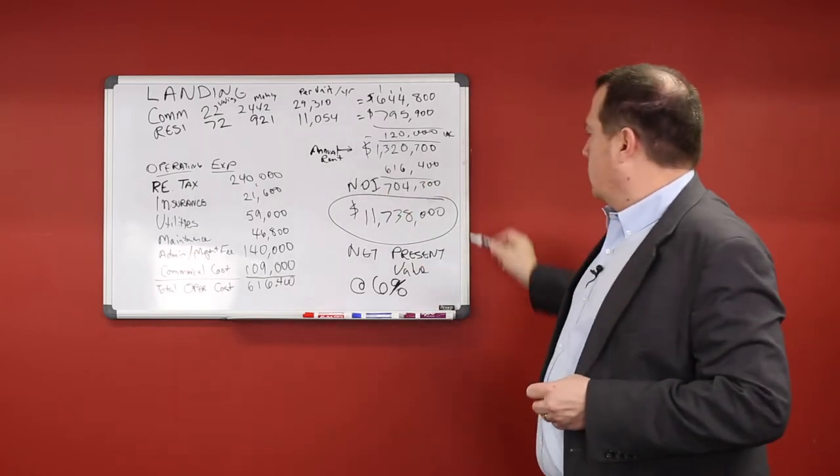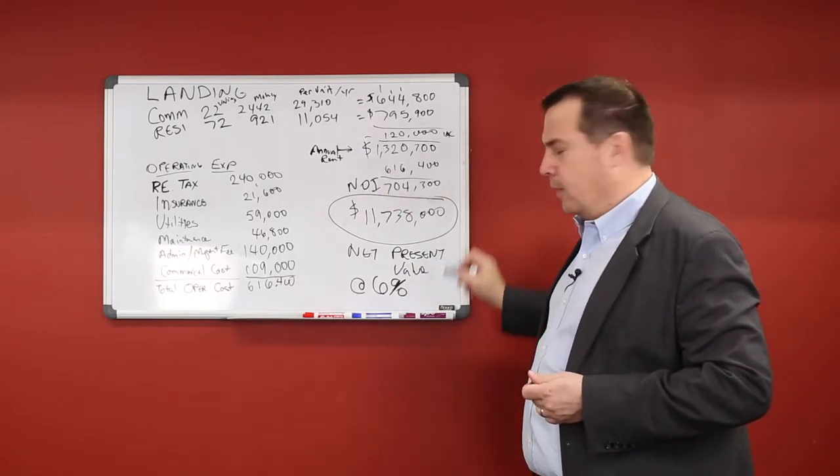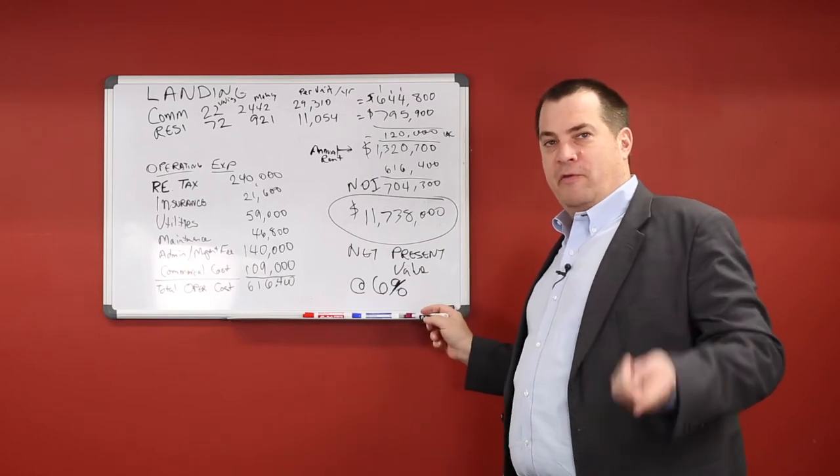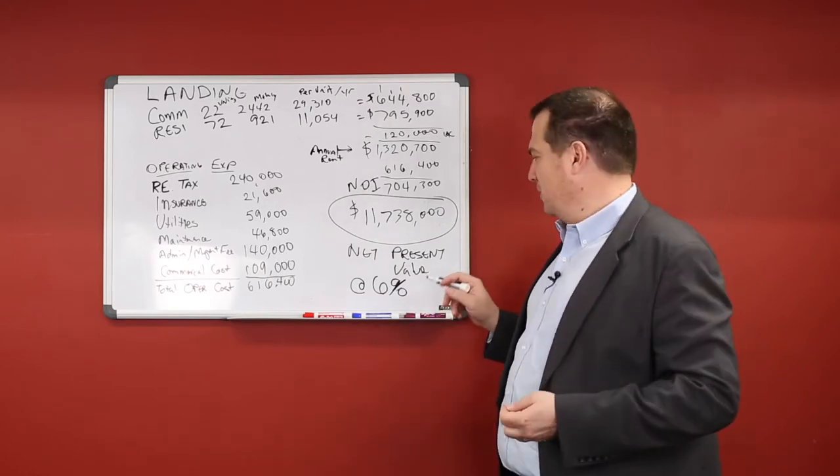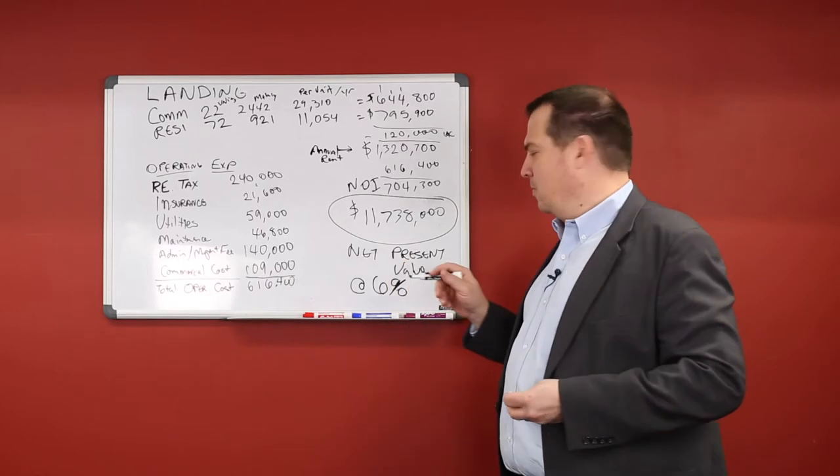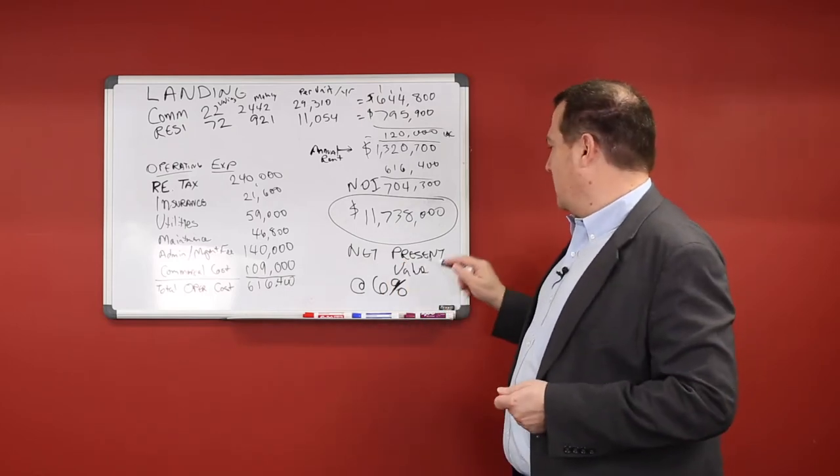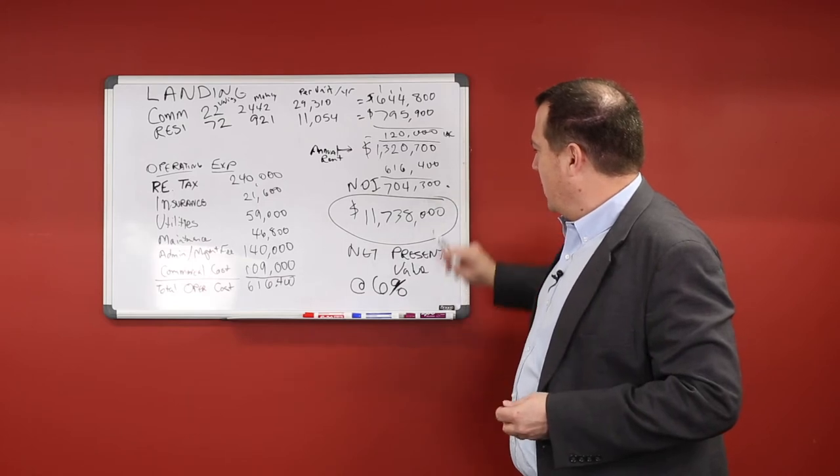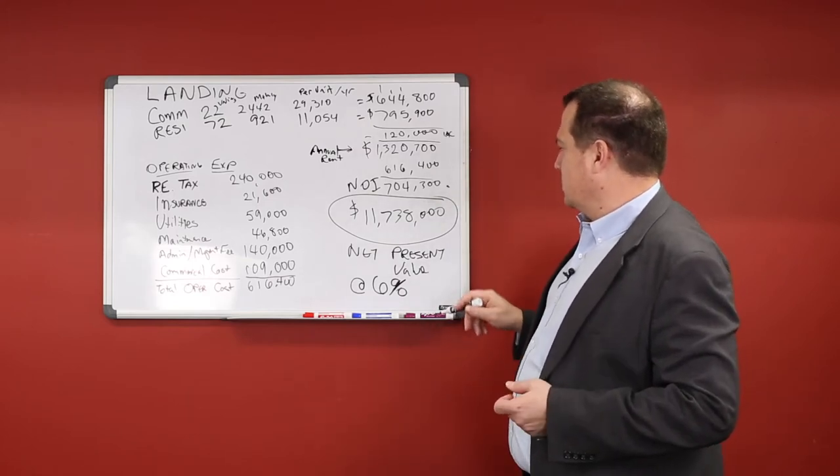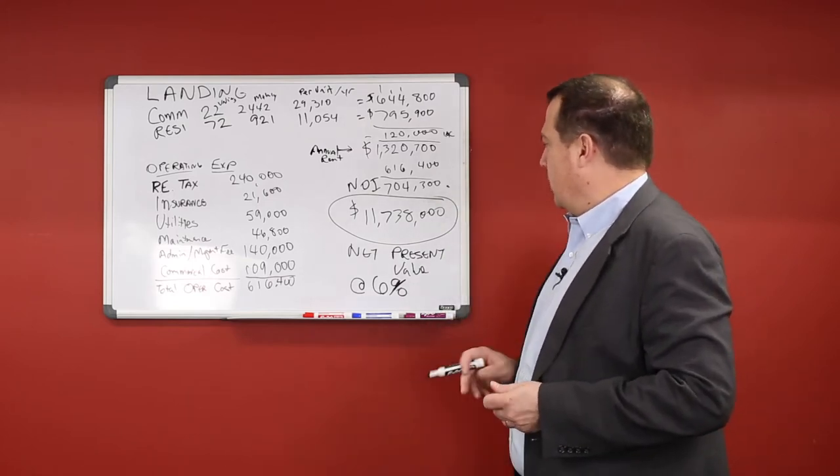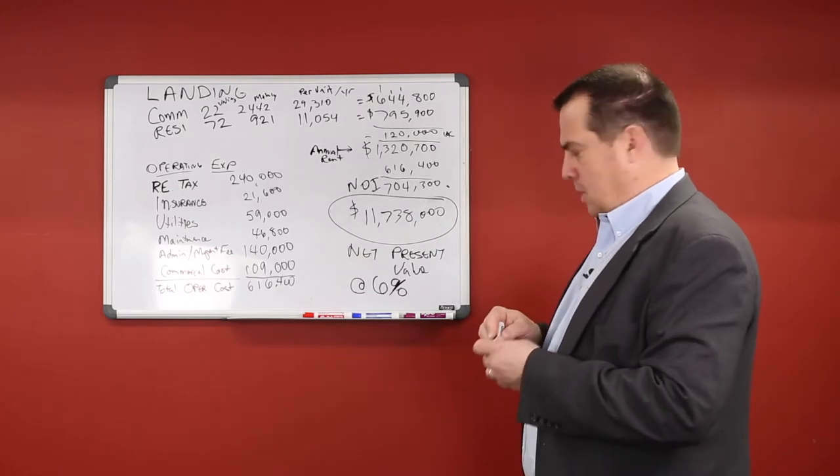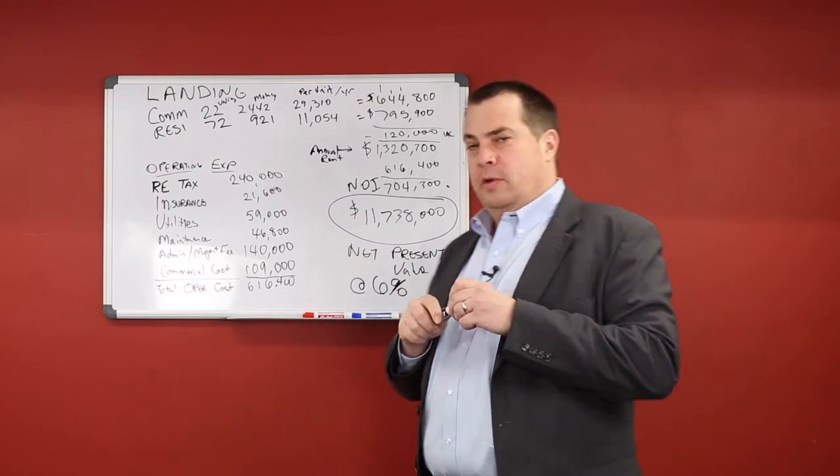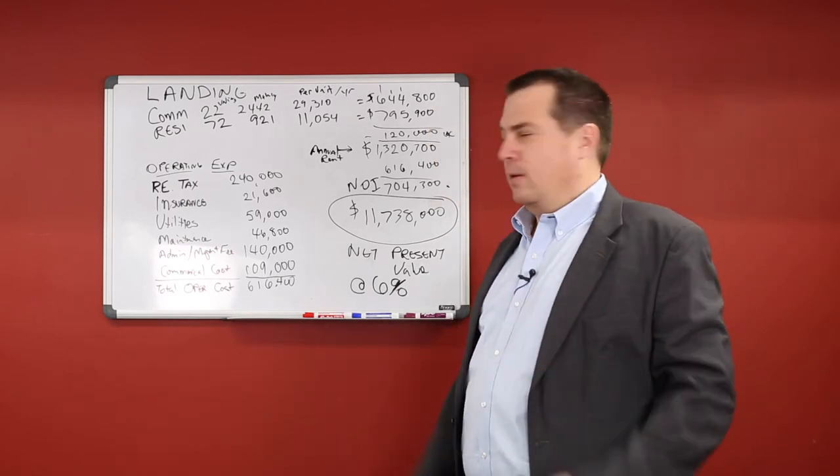And then to arrive at a present value, we just divide this whole thing using our discount rate, which we have a video on discount rate that we shot recently. You can check that out. We'll put a link to that. To get to the net present value, you just divide this net operating income of $704,000 by 6%, and we get to our $11,700,000 net present value.